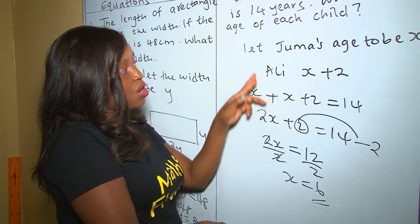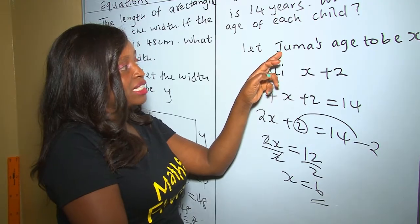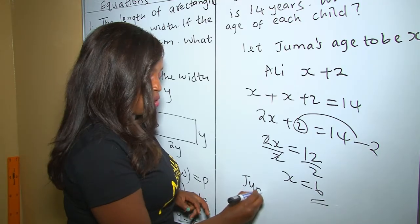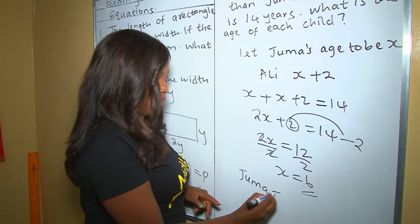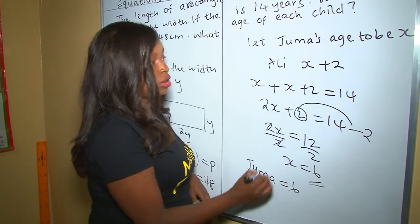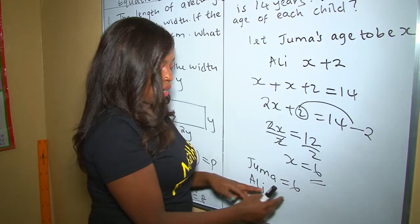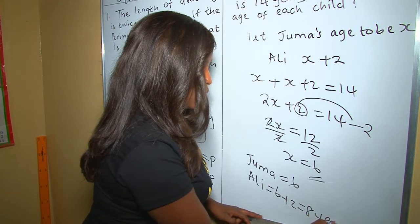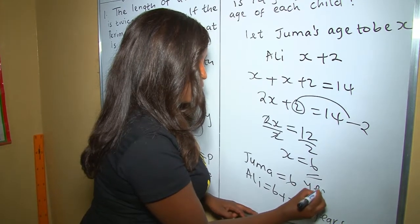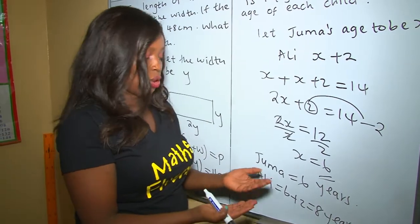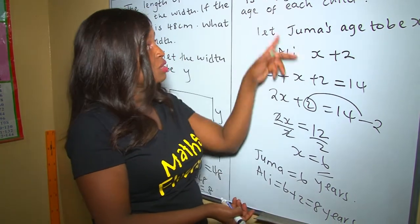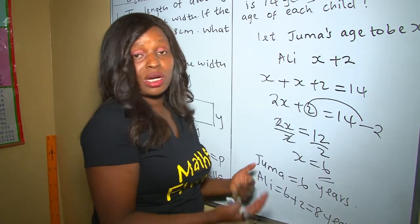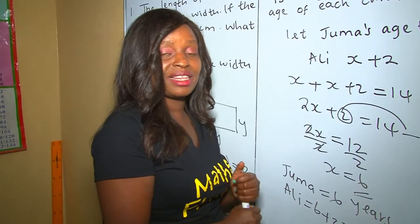Therefore x is Juma's age, so Juma is 6 years old. Ali equals x + 2, and since x is 6, Ali is 6 + 2 = 8 years old. We can verify this: the sum of their ages is 6 + 8 = 14, which confirms our answer is correct.